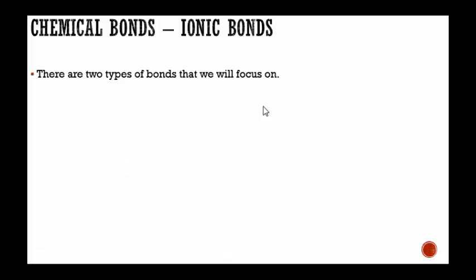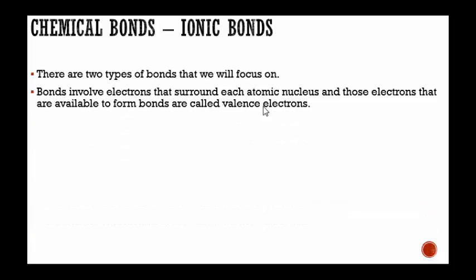Chemical bonds. There are two types of bonds that we're going to focus on. Bonds involve electrons that surround each atomic nucleus, which is the center. Those electrons that are available to form bonds are called valence electrons.